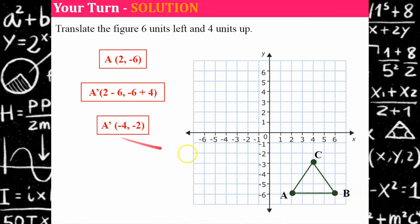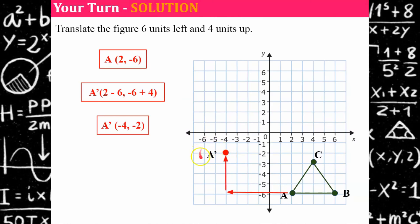Let's count this out: six units left, four units up. And there is (−4, −2) — I label it A prime.